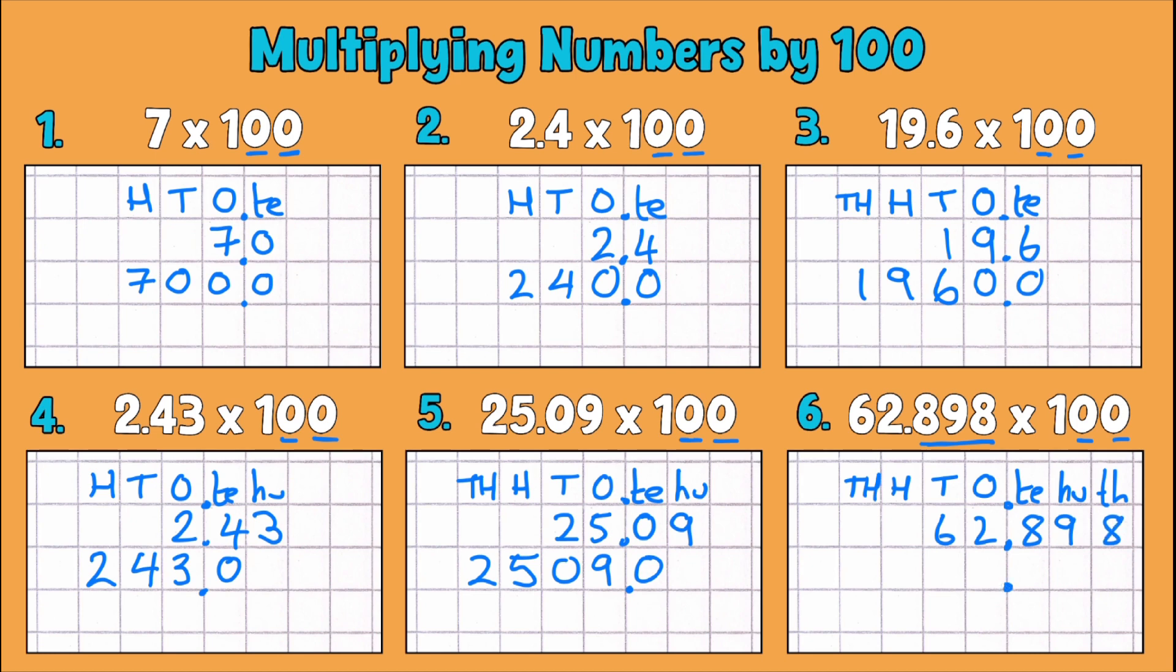Decimal place in line. And once again we move everything two places over to the left. So 6 tenths becomes 6 thousand.